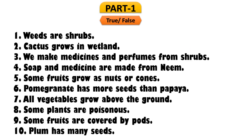Now we will learn some true or false. Let's see which statements are true and which are false. Question 1: The weeds are shrubs. No, it is false. Normally weeds are plants. Question 2: Cactus grows in wetland. No, it normally grows in dry land, so the answer is false. Question 3: We make medicines and perfumes from the shrubs. From the text we learned that we make medicines and perfumes from herbs, so it is false.